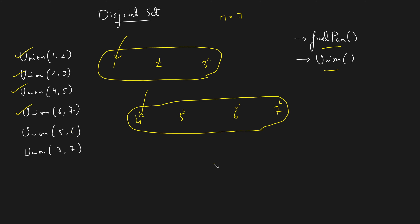We now have two different components. If someone asks whether 2 and 7 belong to the same component, the answer is no. This data structure helps by finding the parent of 2 — which is 1 — and the parent of 7 — which is 4. Since both parents are different, they belong to different components. For nodes 5 and 7: parent of 5 is 4, parent of 7 is 4, so they belong to the same component.